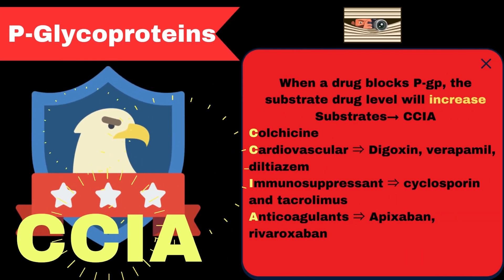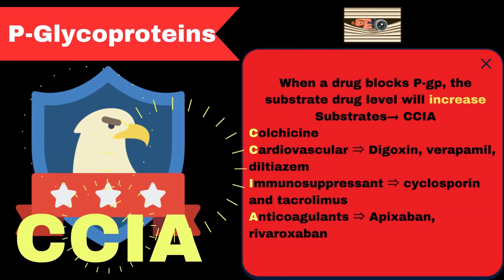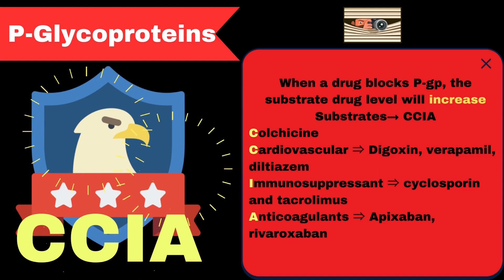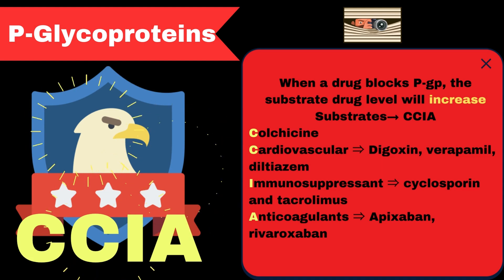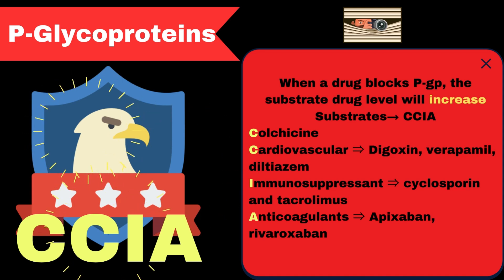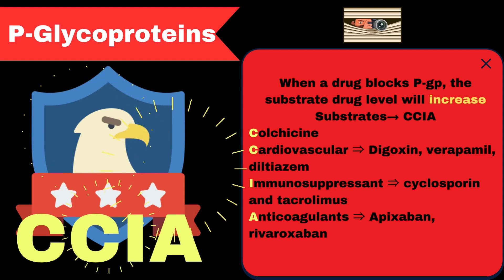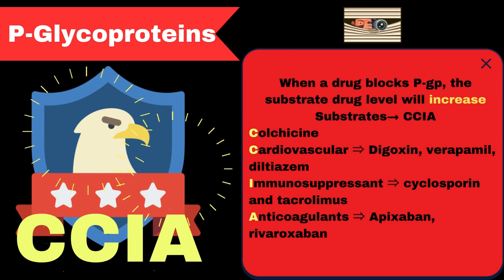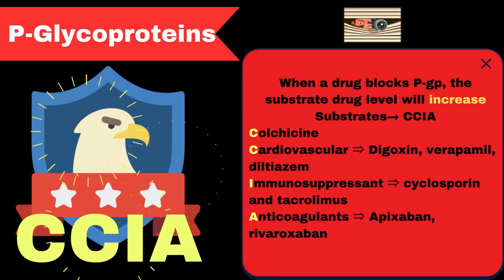When P-glycoproteins are blocked, the level of drug concentration will increase. A good memory trick for this is by remembering CIA, or CCIA, like the Central Intelligence Agency. The first C stands for colchicine. The second C stands for cardiovascular drugs like digoxin, verapamil, and diltiazem. The I stands for immunosuppressant drugs like cyclosporine and tacrolimus. And the A stands for anticoagulants like apixaban and rivaroxaban.